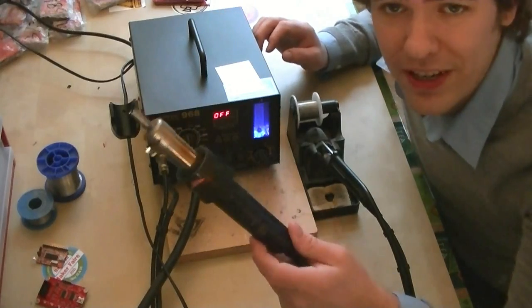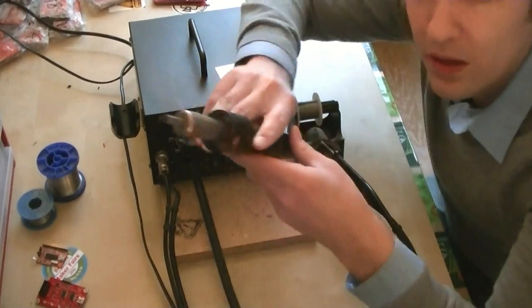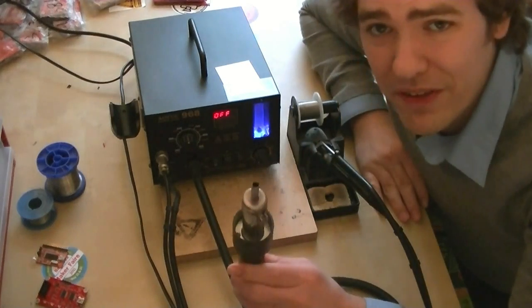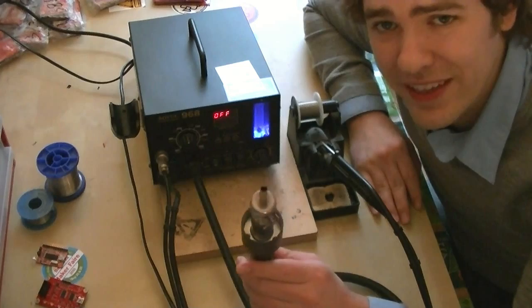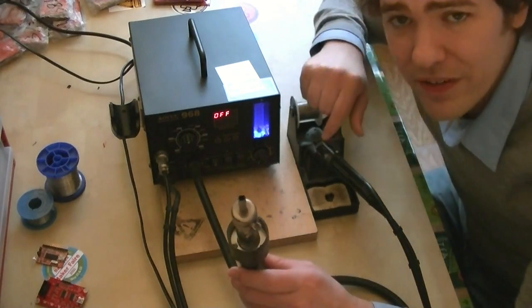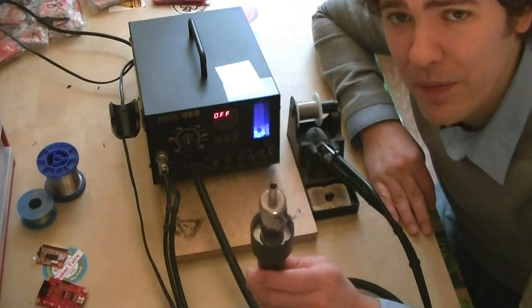The rework tool is this part. This is something you hold to blow hot air. We don't solder with it very often. Some people solder with them. Maybe if you do a QFN chip, you need something like this to solder it, but in general, we solder everything with an iron.